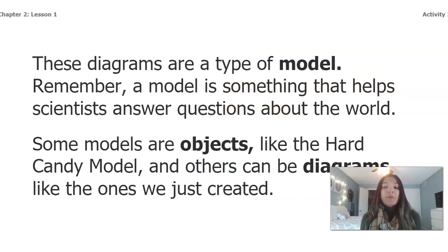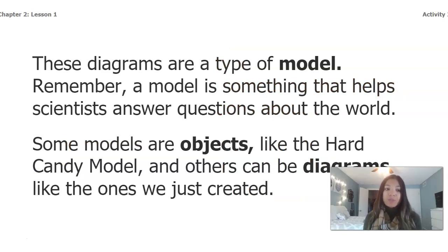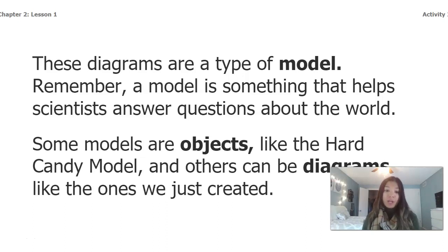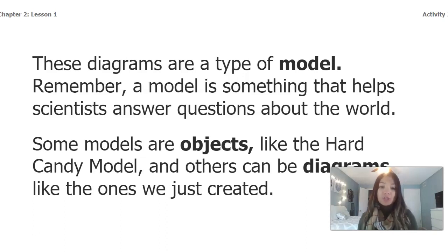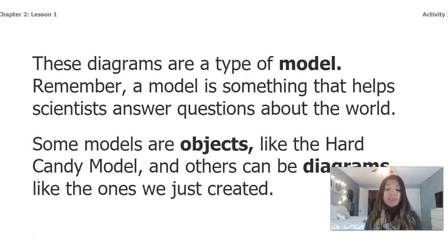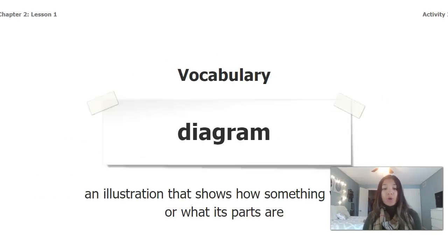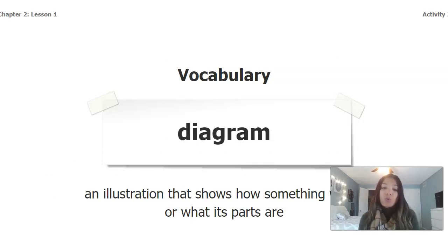These diagrams are a type of model. Remember, a model is something that helps scientists answer questions about the world. Some models are objects, like the hard candy model. Others can be diagrams like the one we just created. Models that are objects are hands-on things we can actually do, while diagrams are things we see on paper — things we're completing and filling out without necessarily having a hard object in front of us. Our vocabulary word is 'diagram': an illustration that shows how something works or what its parts are.